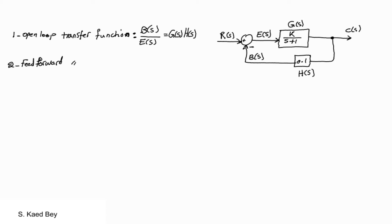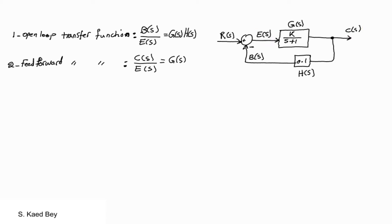The second definition is the feedforward transfer function, and it's defined as the output signal in relation to the error signal, C over E. In our case, the relation of C and E is governed by G: C equals GE.